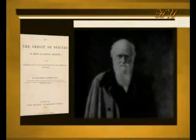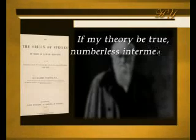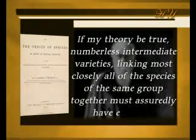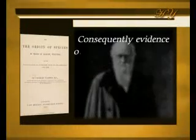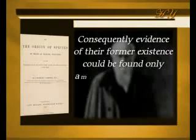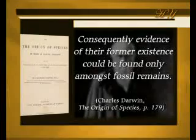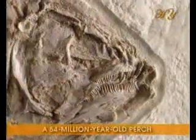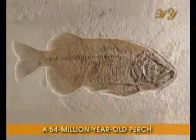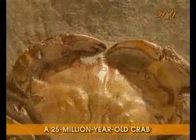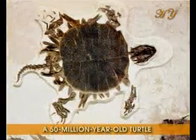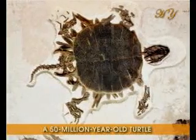Darwin, who was well aware of this fact, said in his book The Origin of Species: "If my theory be true, numberless intermediate varieties linking most closely all of the species of the same group together must assuredly have existed. Consequently, evidence of their former existence could be found only amongst fossil remains." When we look at the fossil record, however, we see no intermediate forms at all. On the contrary, we encounter fully formed, flawless, complex, and perfect life forms. Those that have not gone extinct are no different from those living today.